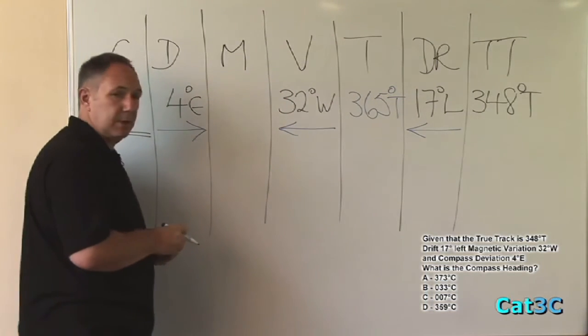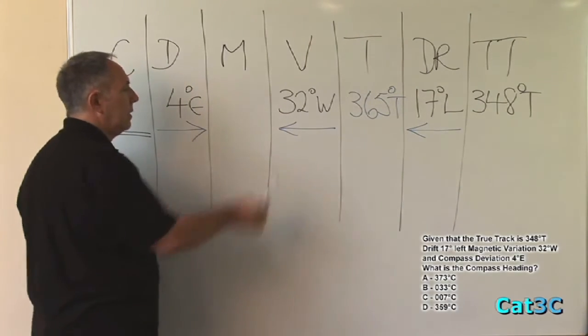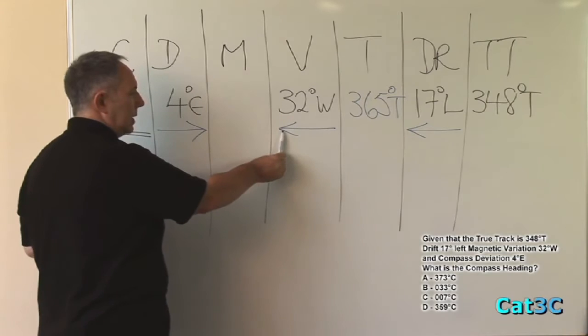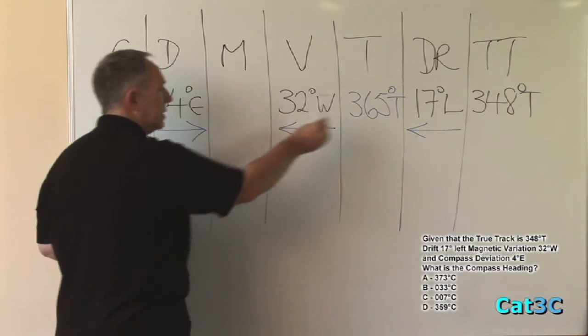The next part of the calculation is to go from true heading to magnetic heading, via variation. Again, the arrow points to the left, which tells us that magnetic is greater than true.